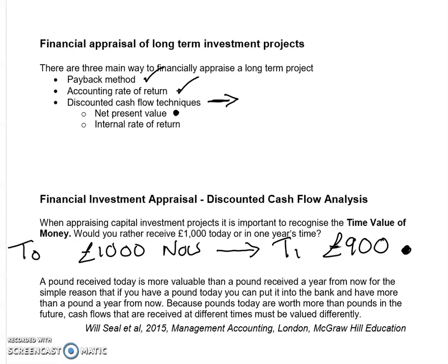If we're going to add up cash flows over future years without adjusting for this, we're adding apples and pears — they are different. So we need to convert the future cash flows into the present value, into the now time. We take all of those future figures and convert them to now.